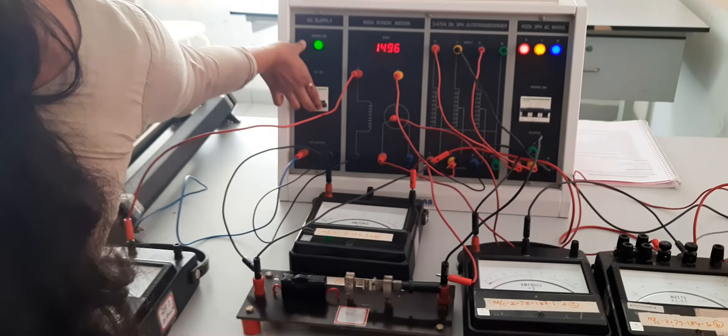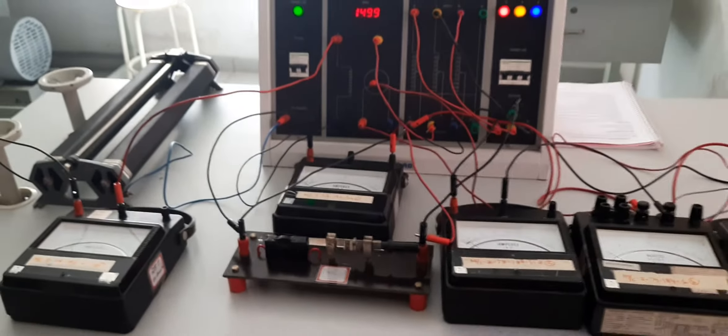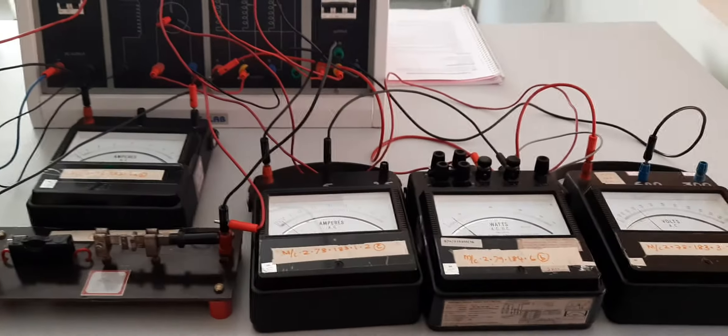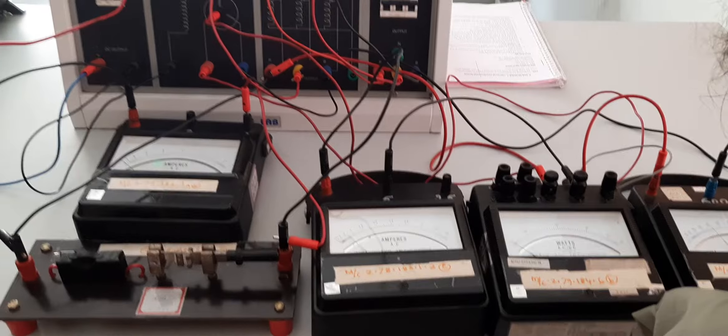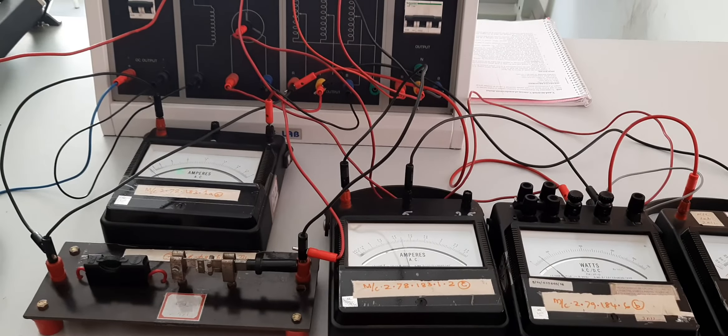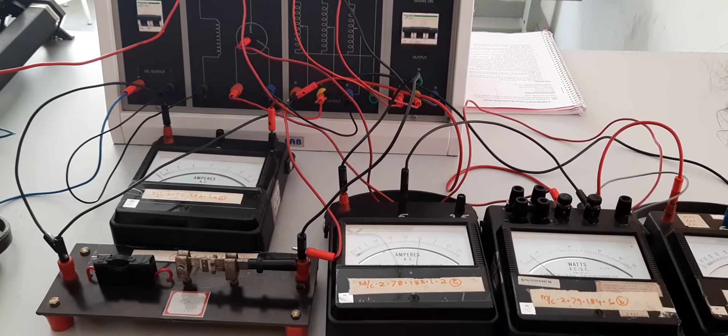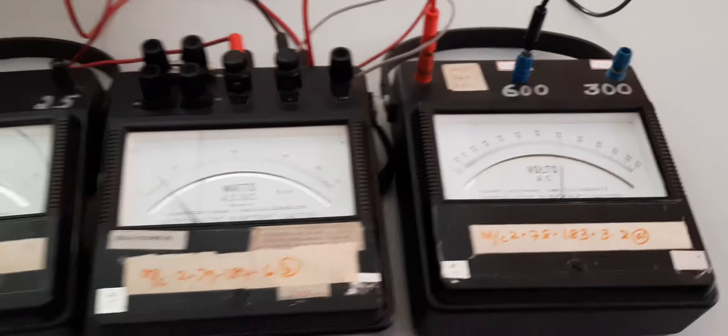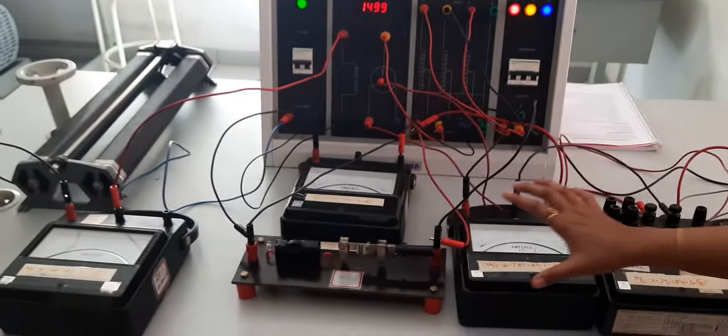Now once the PPST is closed, we will bring this voltage to 400, that is rated value. So the rated voltage has been applied to the synchronous motor. Now once the rated voltage is applied, we will be varying the field rheostat and current.